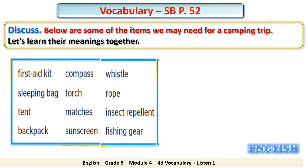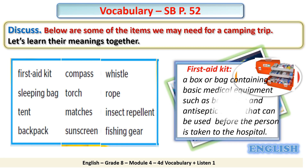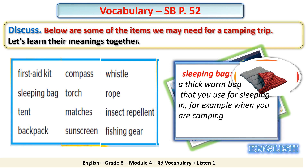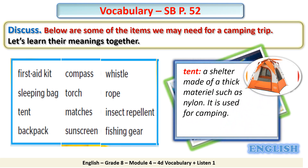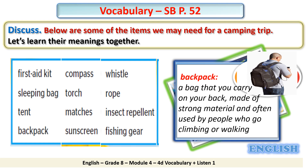Below are some of the items we may need for a camping trip. First Aid Kit — a box or bag containing basic medical equipment such as bandages and antiseptic cream that can be used before the person is taken to the hospital. Sleeping Bag — a thick warm bag that you use for sleeping in, for example when you are camping. Tent — a shelter made of a thick material such as nylon, used for camping. Backpack — a bag that you carry on your back, made of strong material and often used by people who go climbing or walking.